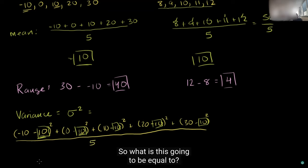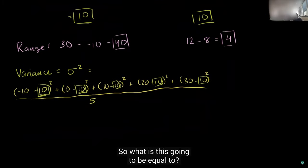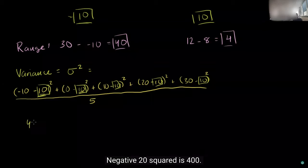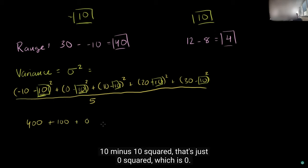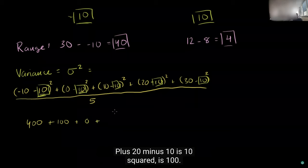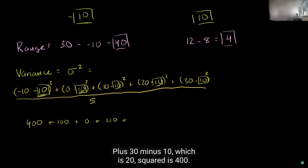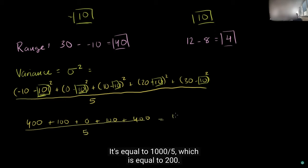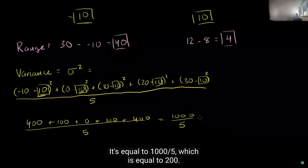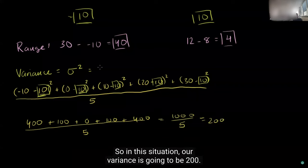What is this equal to? Negative 10 minus 10 is negative 20, squared is 400. 0 minus 10 is negative 10, squared is 100. 10 minus 10 squared is 0. 20 minus 10 is 10, squared is 100. 30 minus 10 is 20, squared is 400. All of that over 5. 400 plus 100 is 500, plus another 500 is 1000. So 1000 over 5 equals 200. Our variance for the first dataset is 200.